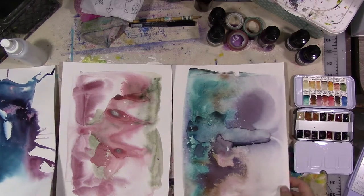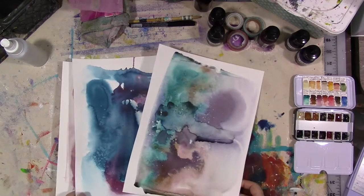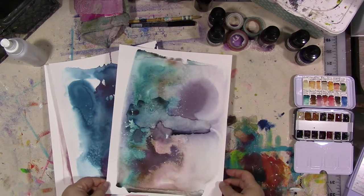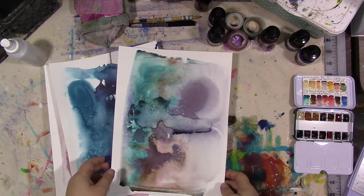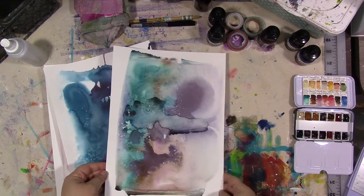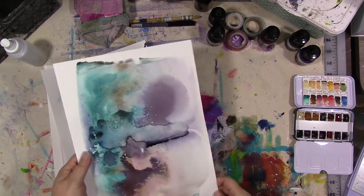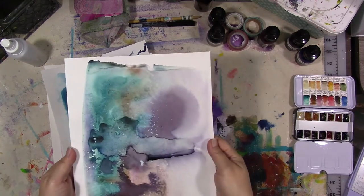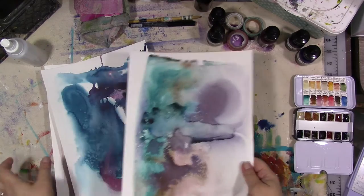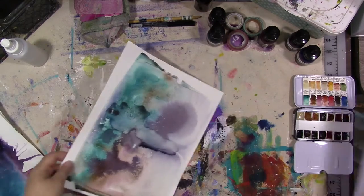So we have all three of our initial stages of our backgrounds done here. Now one thing I forgot to do was trim down the paper a little bit before I got started. These sheets are actually, I think they're 9 by 12, they're actually a little too big for my scanner, so we're going to trim them down a little bit.